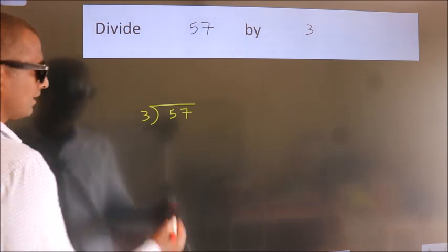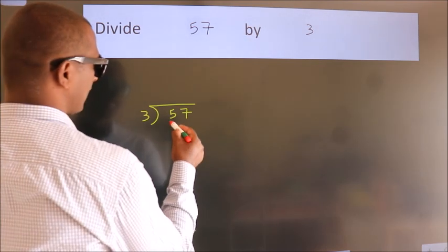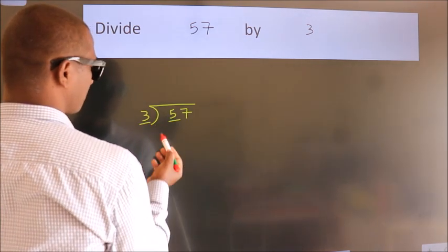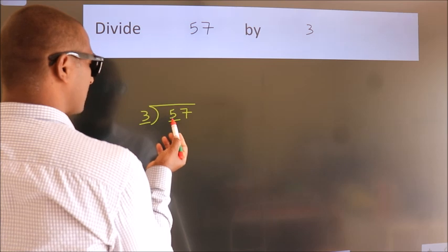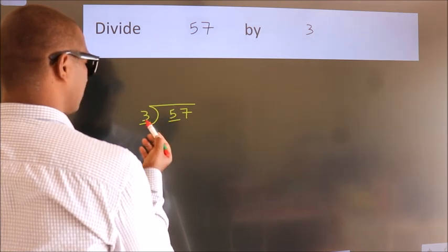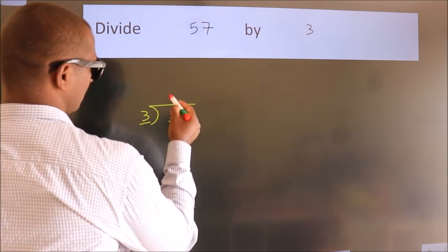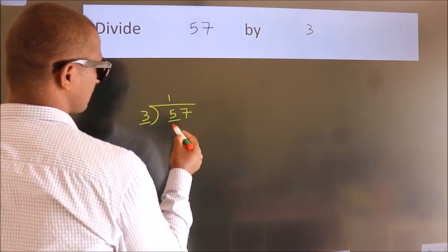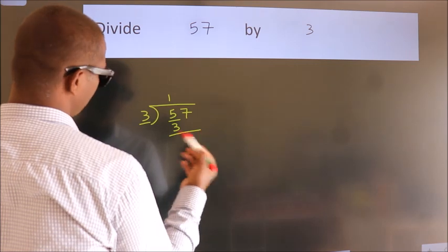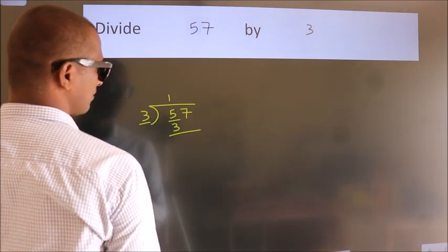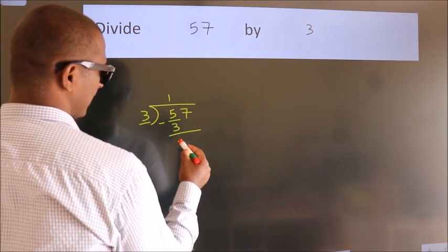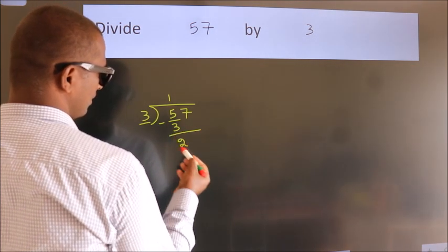Next, here we have 5, here 3. A number close to 5 in the 3 times table is 3 once, which is 3. Now we should subtract. We get 2.